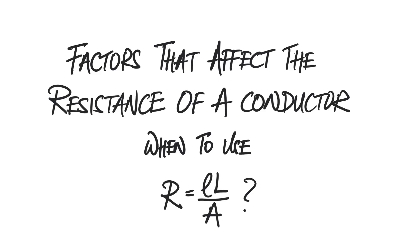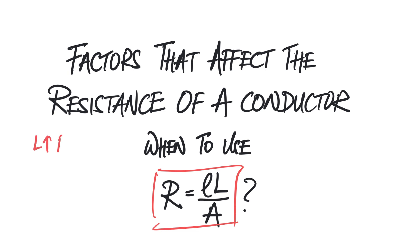In this video, I'll give you some examples where you really need to use the formula R equals rho L over A. Previously, we have learned that when the length increases, the resistance of the conductor will increase. Likewise, when resistivity — which is unique to the material — increases, the resistance will increase.